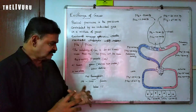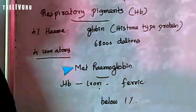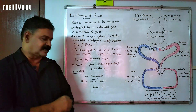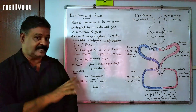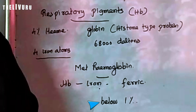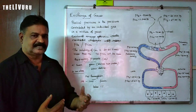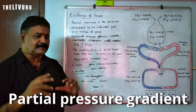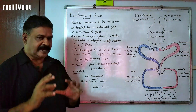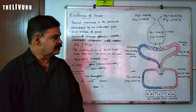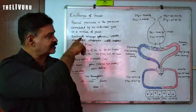Ferrous heme is linked to oxygen, while in ferric form (methemoglobin) oxygen is released from hemoglobin. Hemoglobin will contain oxygen. Methemoglobin is less than 1% of total hemoglobin. This is why gas exchange occurs on the basis of partial pressure gradient.